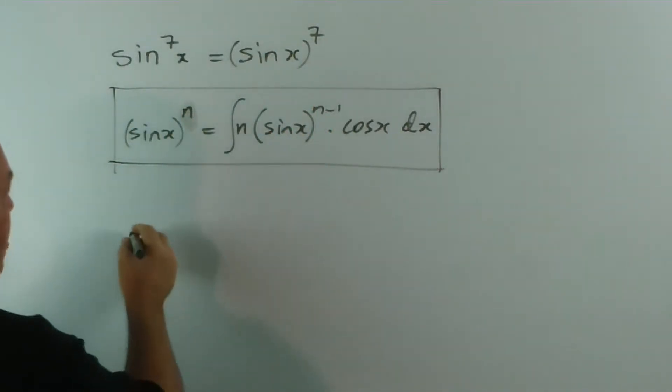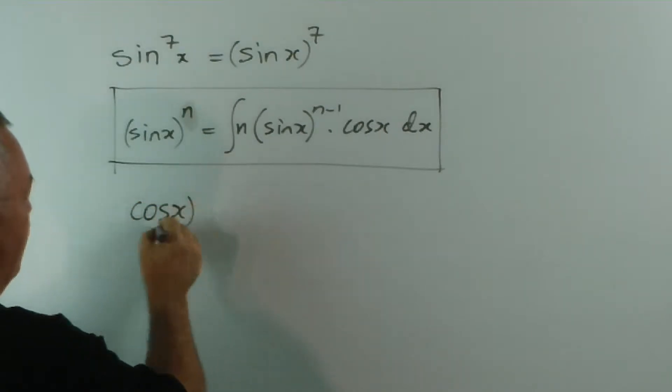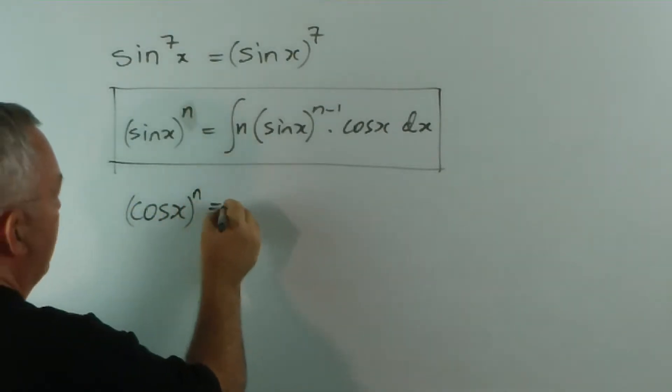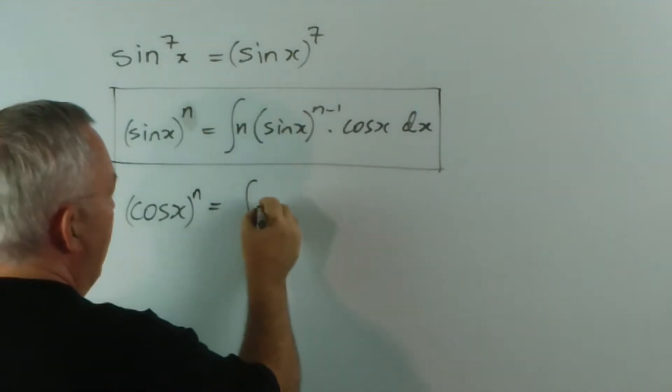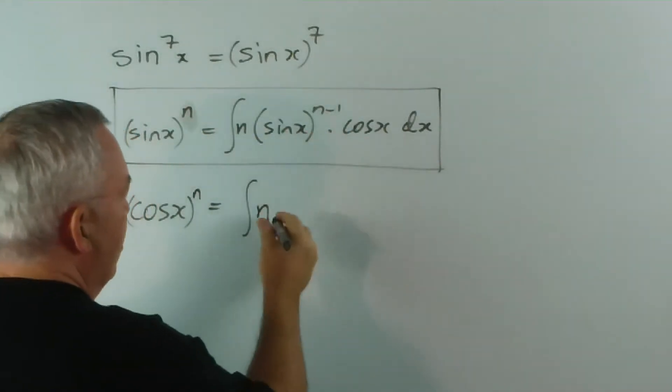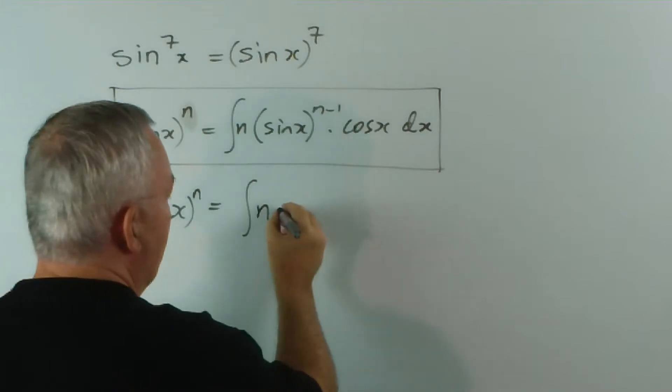Similarly, I won't go through the derivation, but cos x to the n will look like n. I'll actually move the derivative forward. The derivative of cos is minus sine.